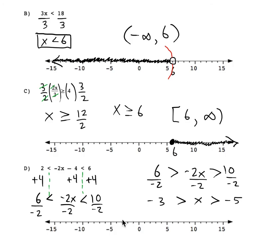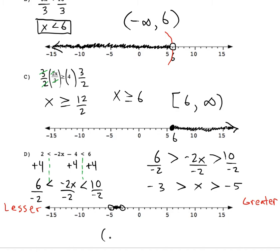Negative 3 would be here and negative 5 is over here. The term 'greater' in math means more positive — it means to the right. Any number to the right on the number line is greater than any number to the left. So lesser numbers are to the left and greater numbers are to the right. We shade everything between negative 5 and negative 3 as our solution set. In interval notation, the solution set is everything between negative 5 and negative 3.